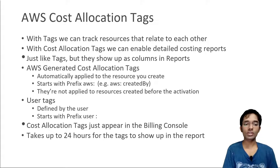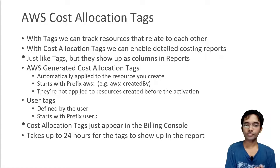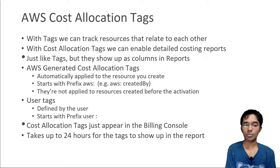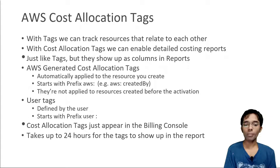We can also use these tags for cost allocation. Using cost allocation tags, we can enable detailed costing reports. They are just like regular tags, but when we look at the billing reports, they will show up as additional columns, which allows us to divide our data more specifically.